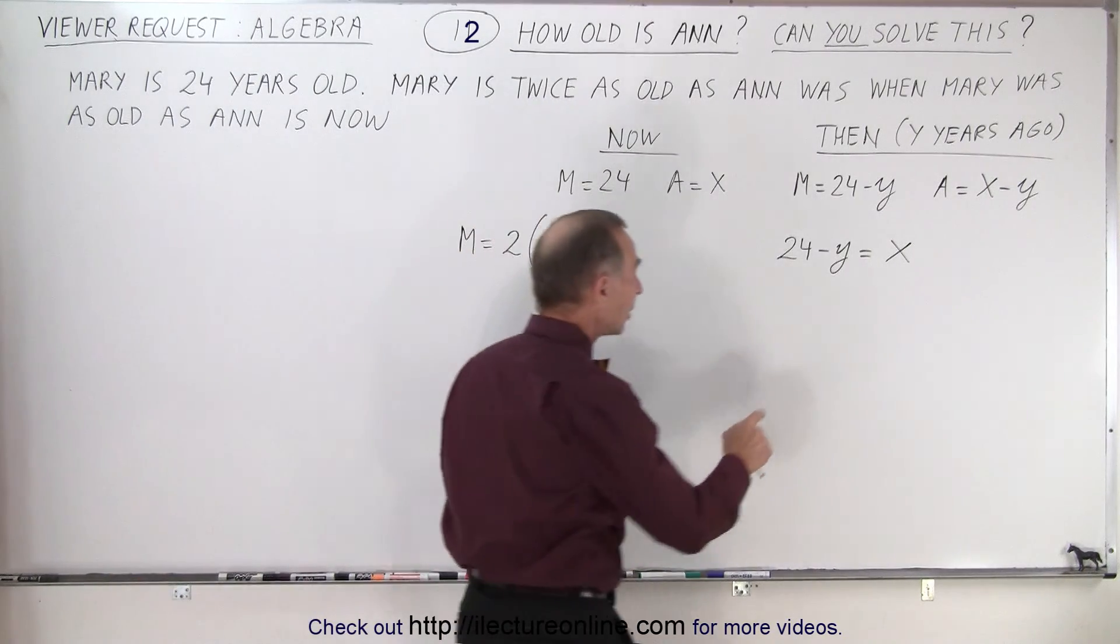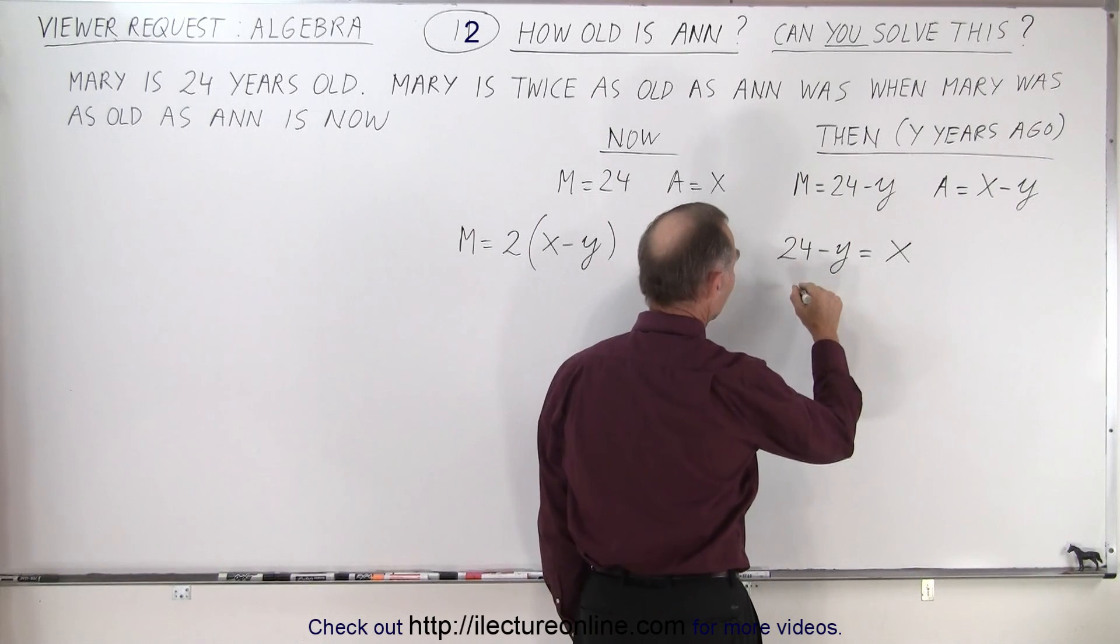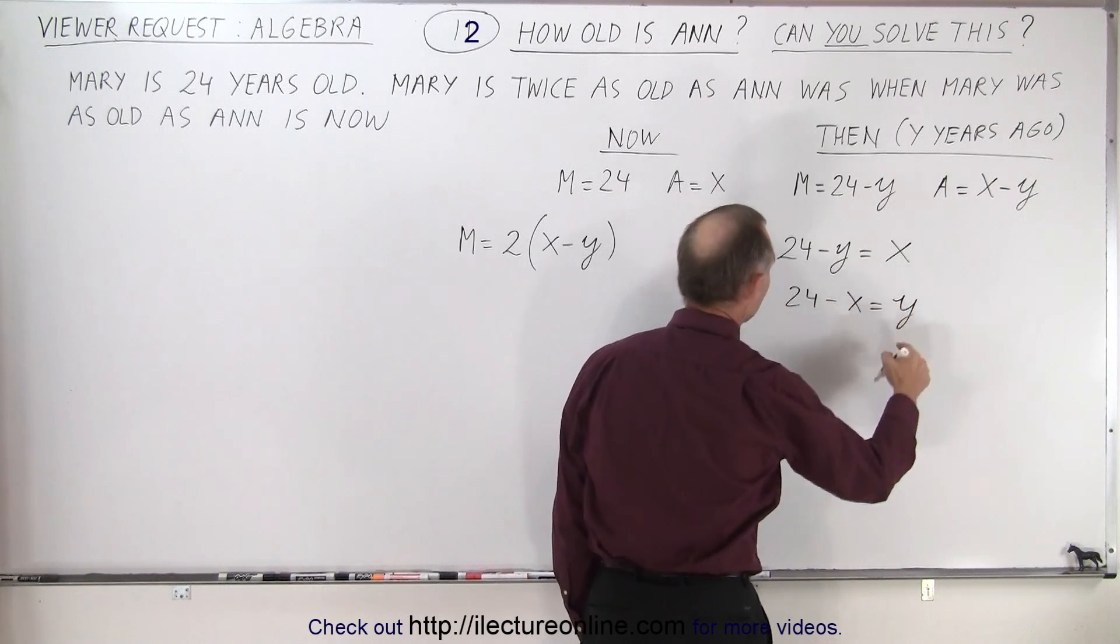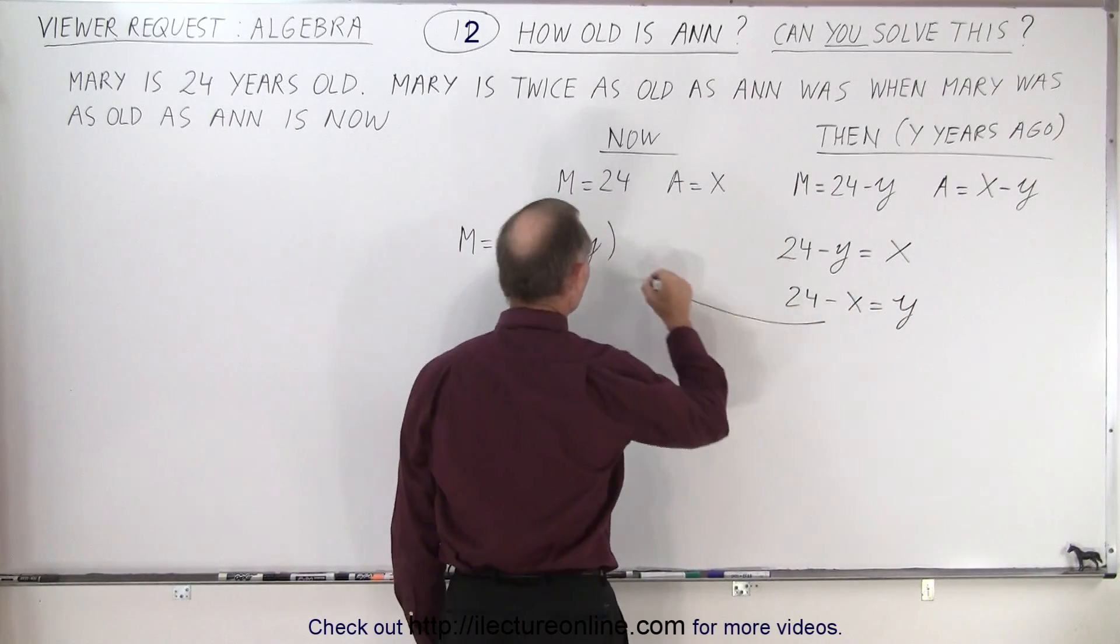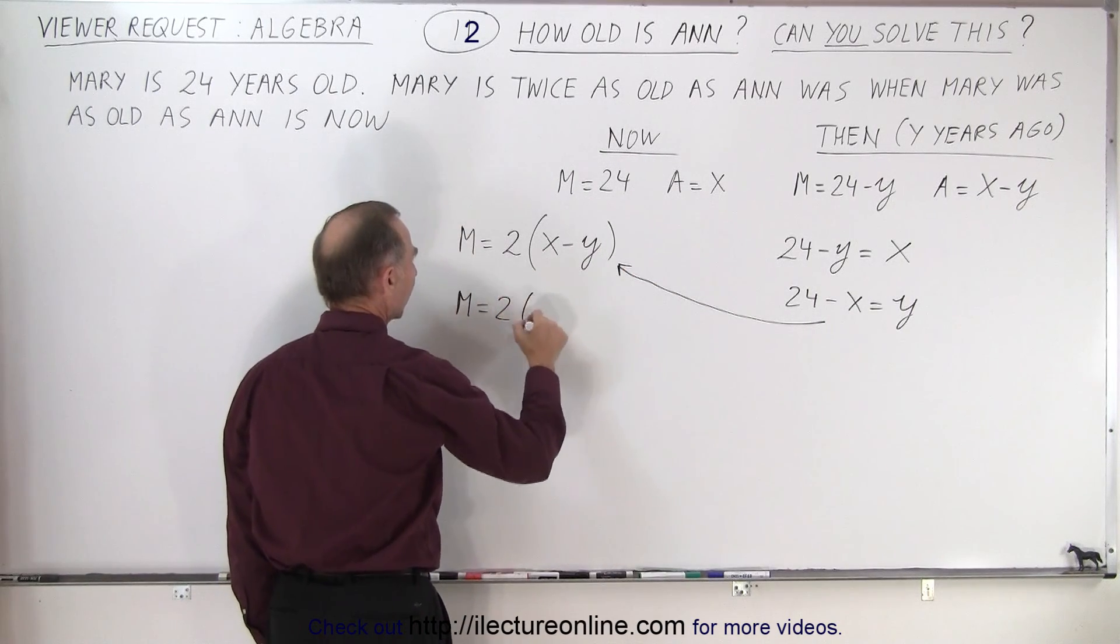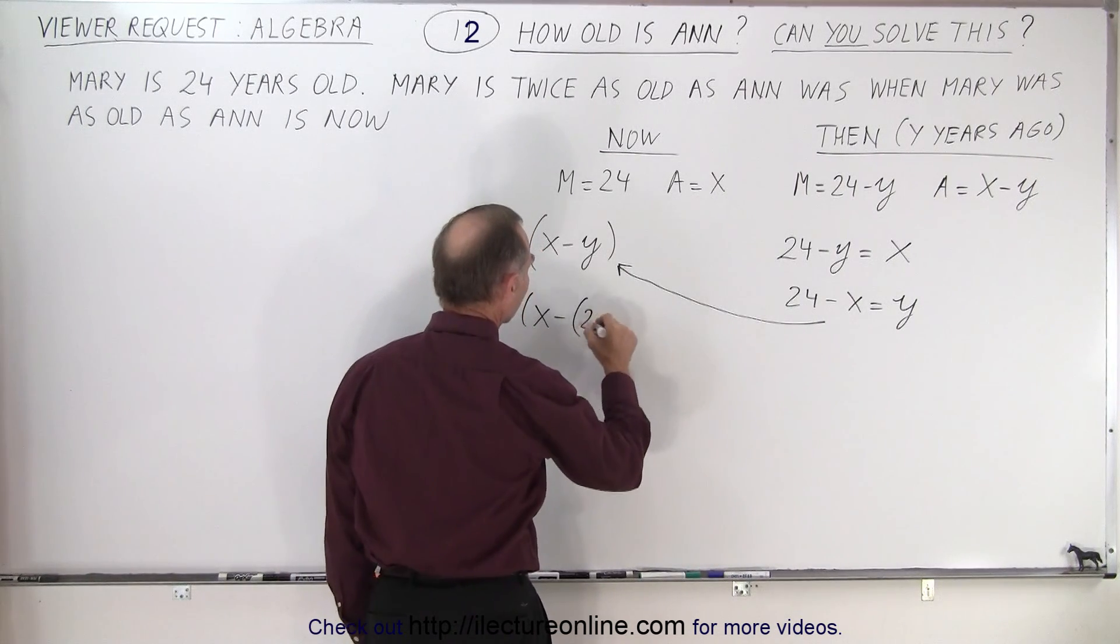So the first thing we can do is plug in for Y, solve this for Y I should say. So we have 24 minus X equals Y, and then we can substitute that in here. So we're going to take this and substitute it in here, so we have Mary is equal to 2 times X minus and Y is 24 minus X.